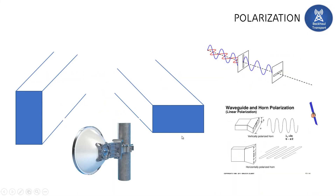Now let's move on to polarization. The electric field plays a crucial role, as it determines the orientation of the link — whether vertical or horizontal polarization. The position of the feed determines the polarization. If the feed is perpendicular to the earth's surface, the electric field is horizontal and the link is horizontally polarized. If the feed is horizontal to the surface, the electric field is vertical and the link is vertically polarized.